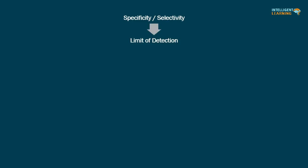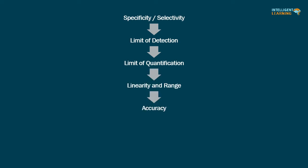Typical analytical method parameters are: specificity or selectivity, limit of detection, limit of quantification, linearity and range, accuracy, precision, and robustness or ruggedness.